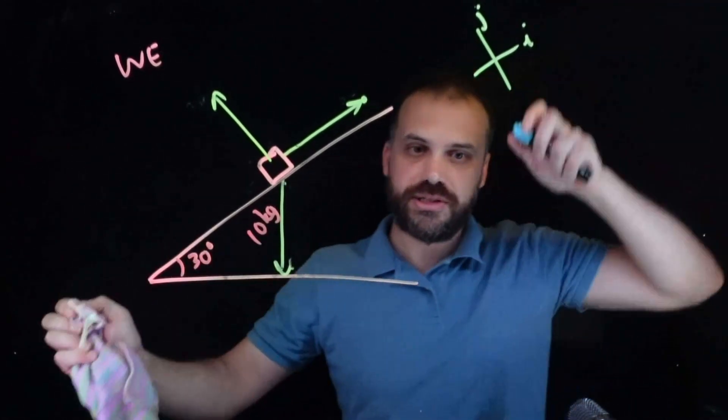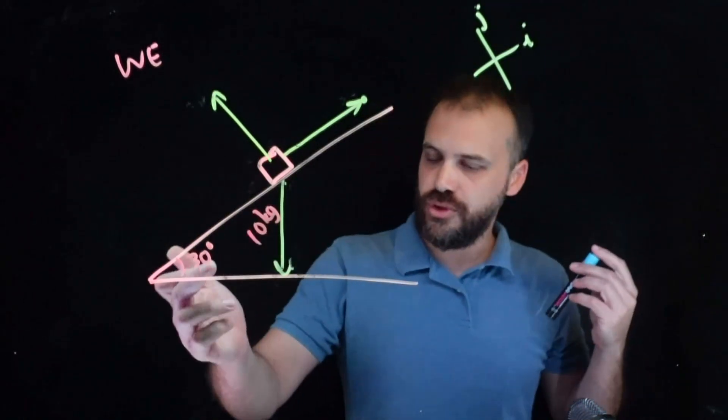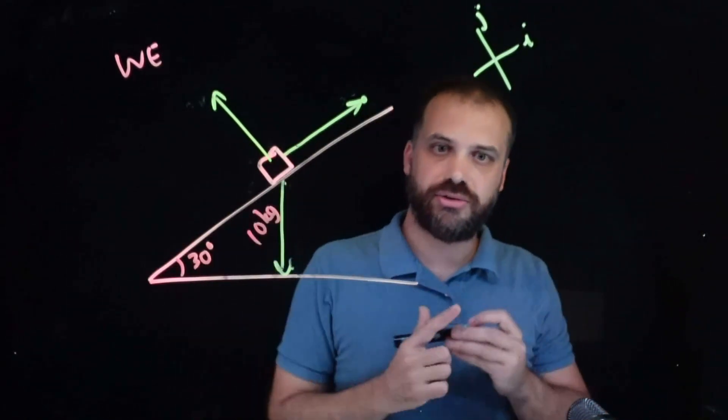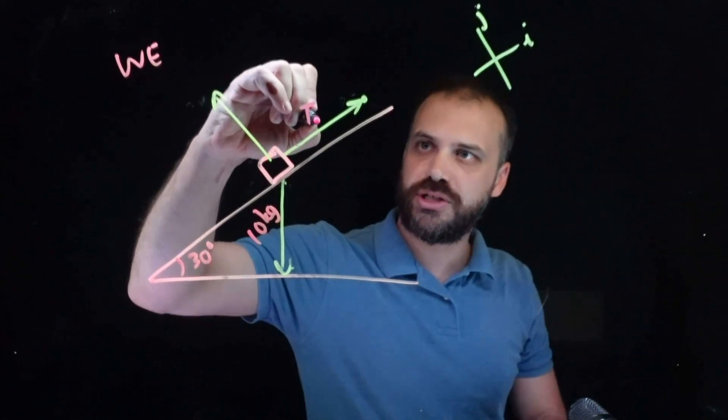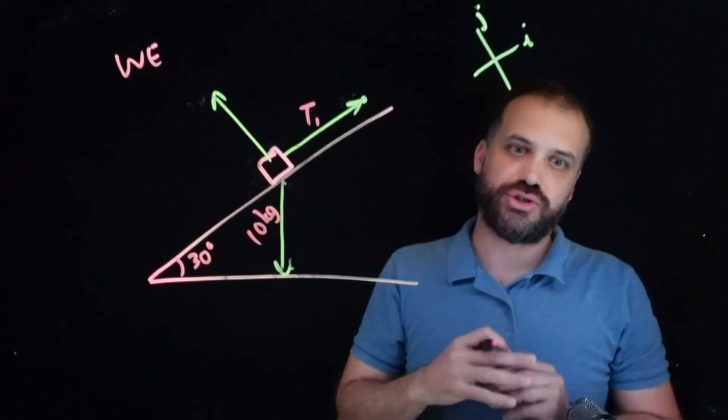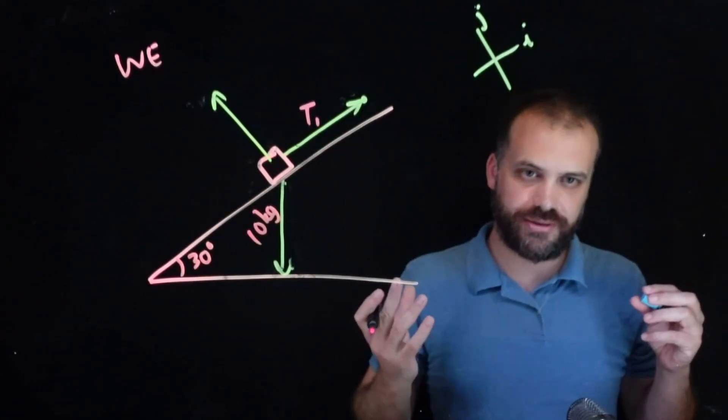So this is the question. 30 degree angle, 10 kilogram weight, and then the question is, find the tension in the string holding this thing together.